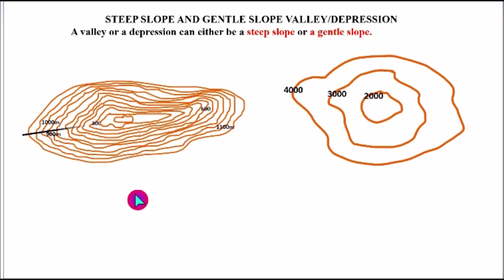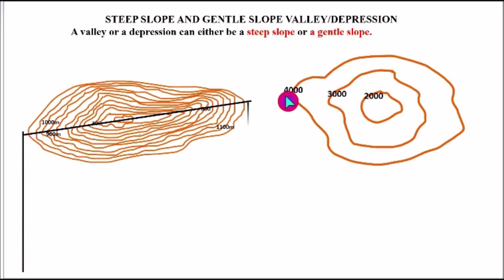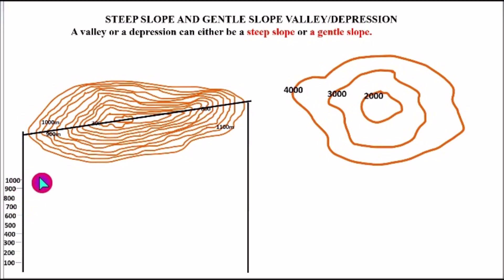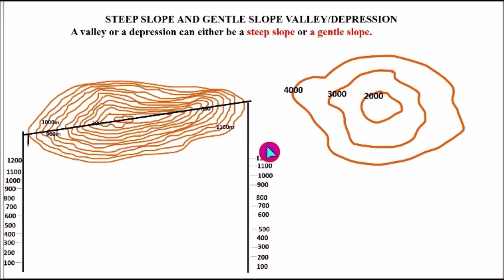Let's use cross-section to explain this concept. You draw a horizontal line to cut across all the contours. Then you draw your vertical axis at the left, then another vertical axis at the right. You mark the vertical axis at the left according to the calibration of the contour. The lowest contour is 100, then going up: 700, 800, 900, 1,000, 1,100, and 1,200. You do the same at the right side.